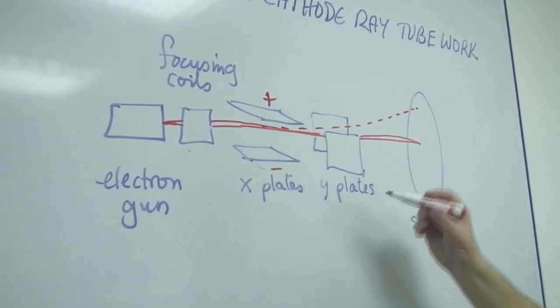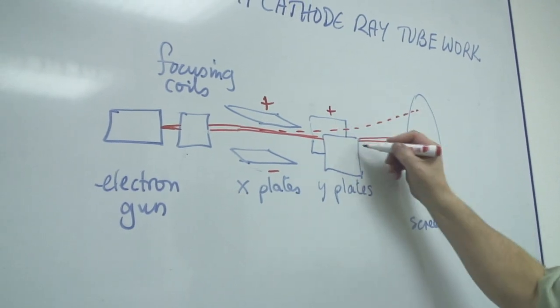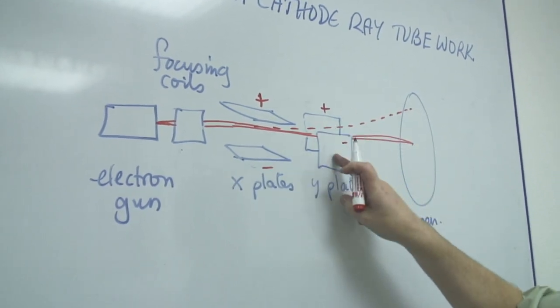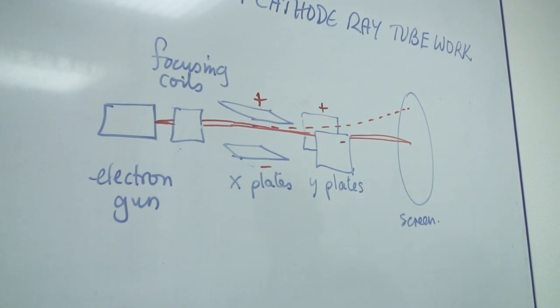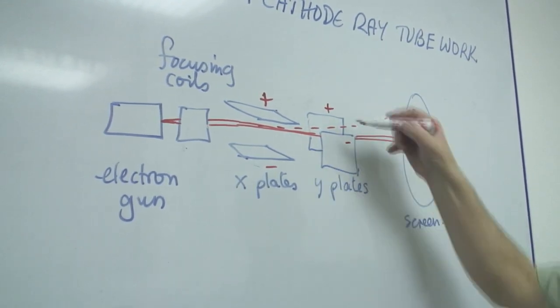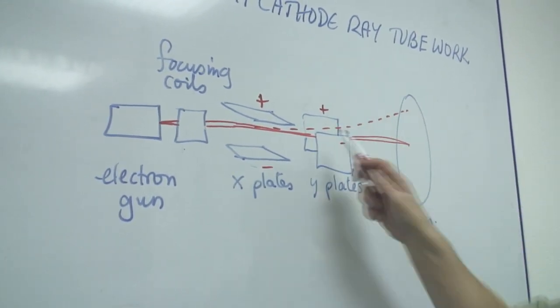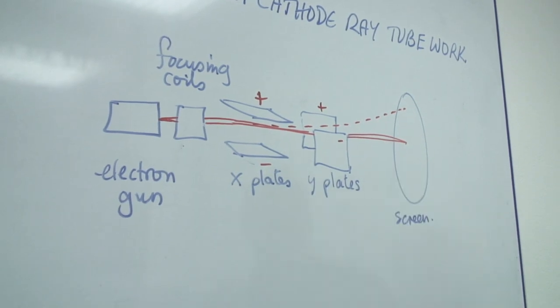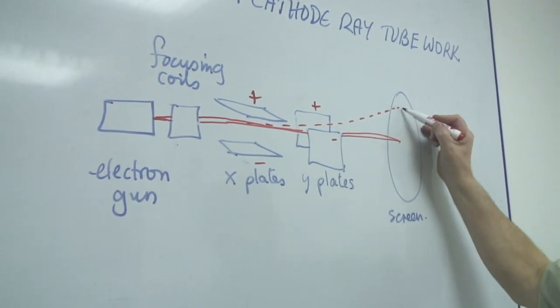If you apply the same positive and negative across the Y plates, what you will find is that again there will be a movement, in this case left to right, and these plates will cause the beam to move to the right.